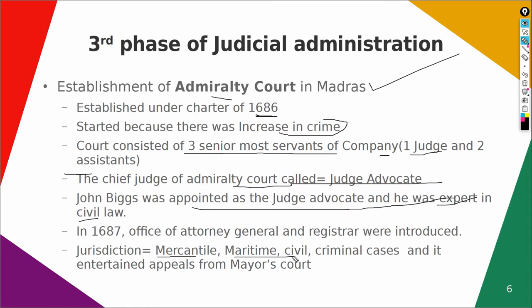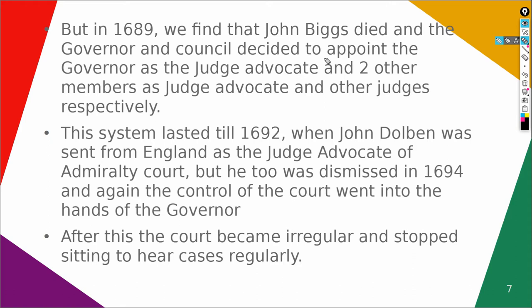The Admiralty Court also acted as the appellate court from the Mayor's Court, hearing appeals coming from there. In 1689, John Biggs died and the Governor and Council decided to appoint the Governor himself as the Judge Advocate, while the two other members of the Admiralty Court were replaced by members of the Governor's Council. This way the judiciary and executive became one, as the members of the judiciary were now the Governor and two members of his council — there was no separation between judiciary and executive.